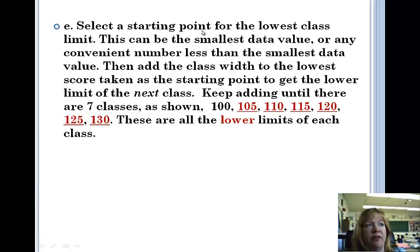Alright, so let's look at the starting point for the lowest class. The starting point is 100 and then we go up by 5 because that's the width of our class. So you go 100, 105, 110, 115, 120, 125, 130. Sounds like I'm at an auction, doesn't it?